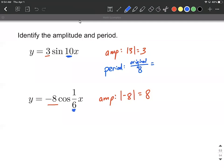So in our case, the original period for both sine and cosine is two pi. And then we just need to divide by that number that's multiplied on the inside. A little bit of simplifying down here and we get pi over five.